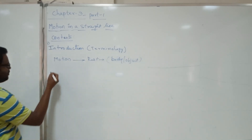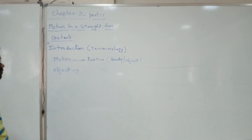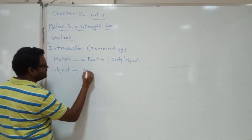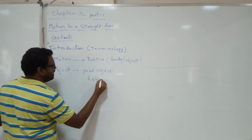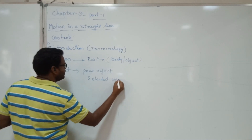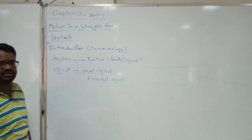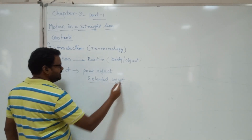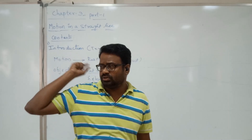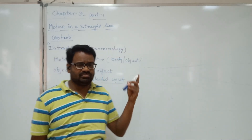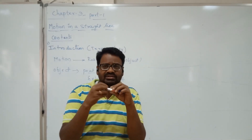In physics, objects are defined in two forms: a point object and an extended object. The smallest part of anything is called a point object. An extended object is a combination of many such point objects. For example, this marker I am using is an extended object. The smallest particle I can break it into — can I break it into two, four, eight, sixteen parts? That smallest particle would be one point object.